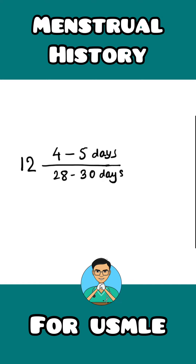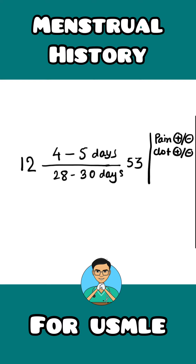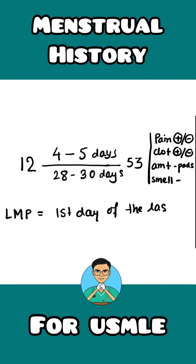After that, if the lady is older and has undergone menopause, we write the age of menopause. Along with that, we write four points: whether she is suffering from any pain or not — pain present or absent. Then we talk about whether some clots come out or not — clot present or absent. Then we talk about the amount of bleeding in terms of pads — how many pads changed per day. Finally, we talk about whether there is any unusual smell during the bleeding phase. Along with that, we add the LMP of the lady, that is the first day of the last bleeding phase she experienced.